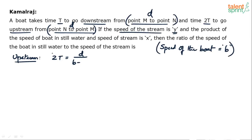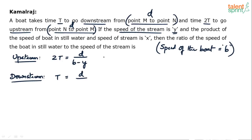So the upstream case is: time equals distance by speed, giving 2t = d / (b − y). For the downstream case, the time taken is t, so t = d / (b + y), since downstream speed is b plus y.